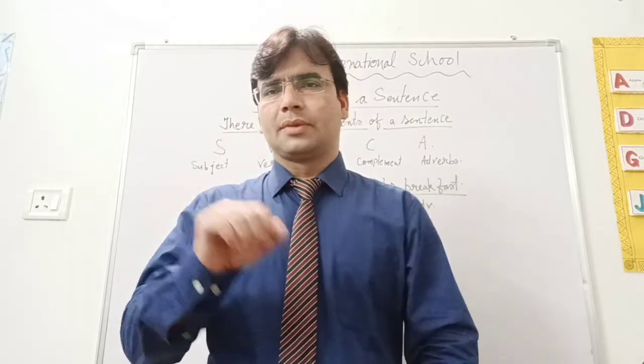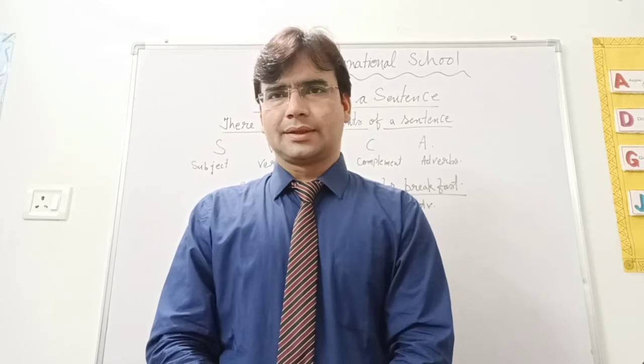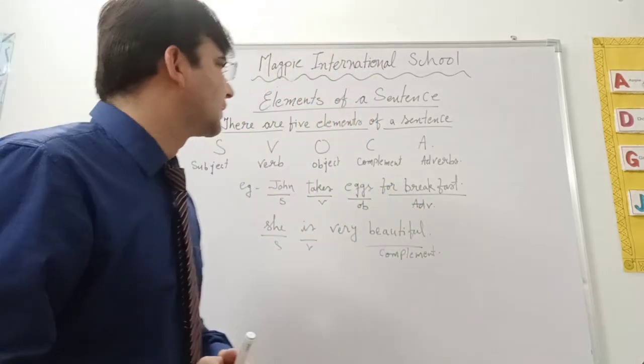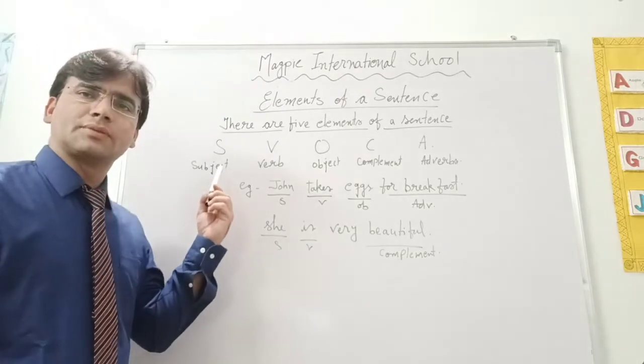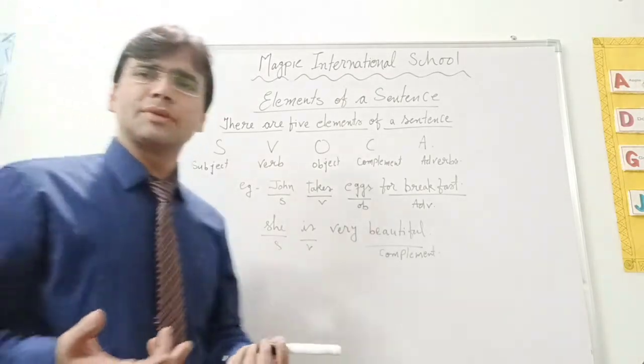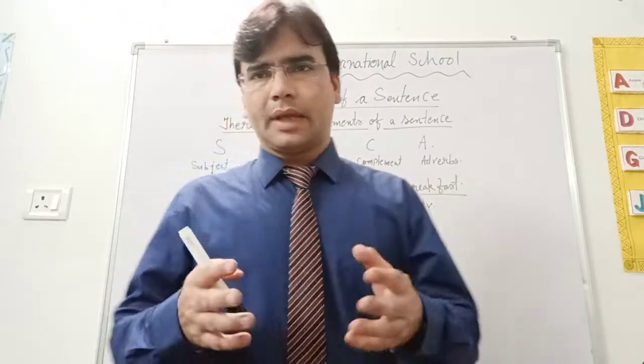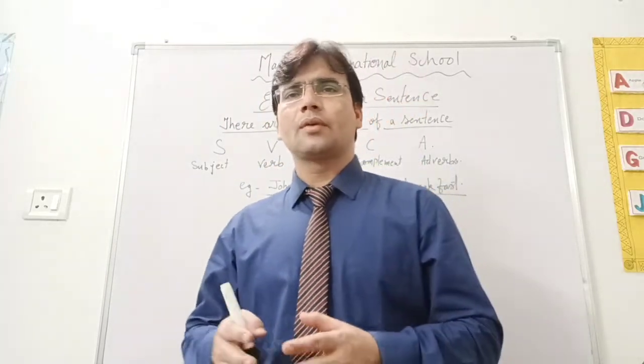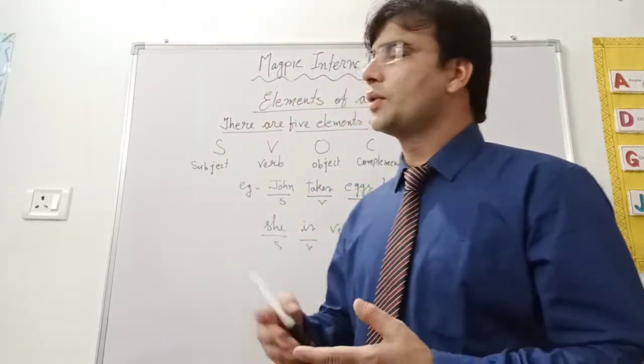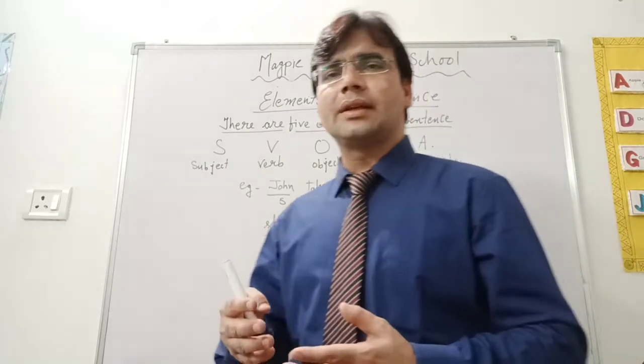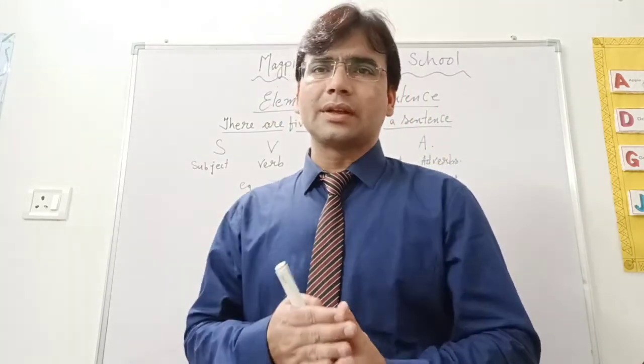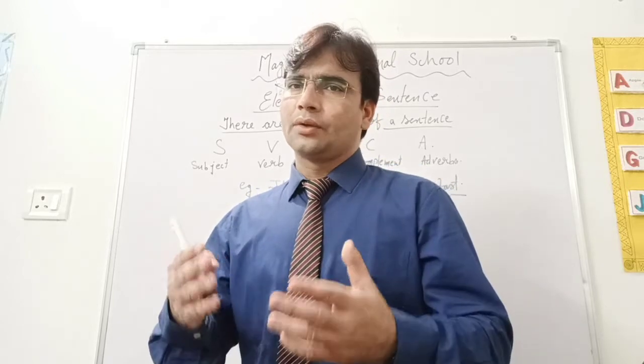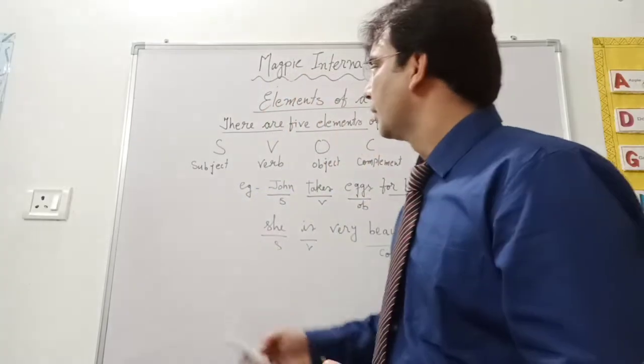We need 5 elements to frame a complete sentence. The first thing which we need is subject. What is a subject? I have told you in the last video that what is a subject. Subject is like any kind of thing. When we talk about a sentence or a person, then that is our subject.